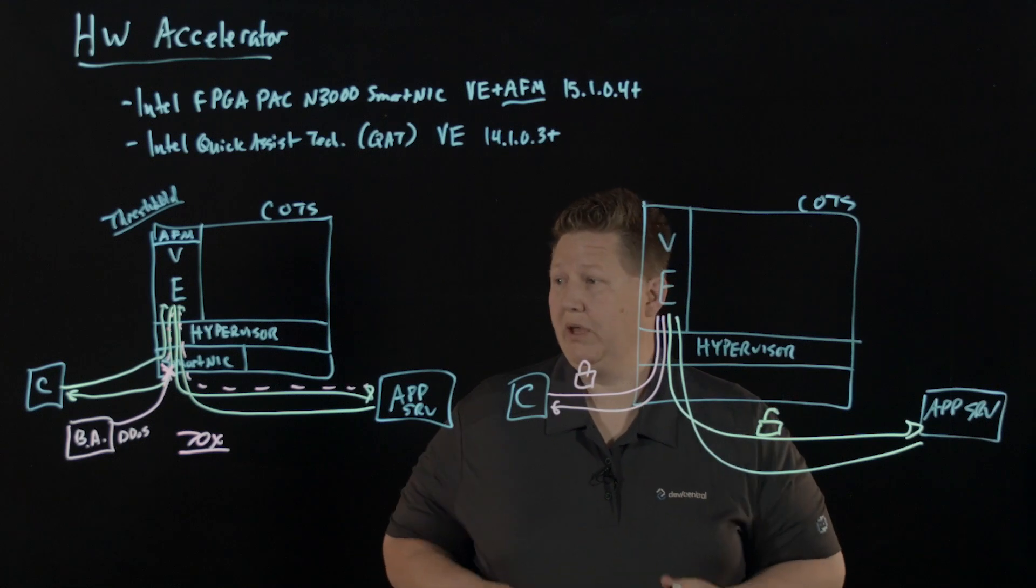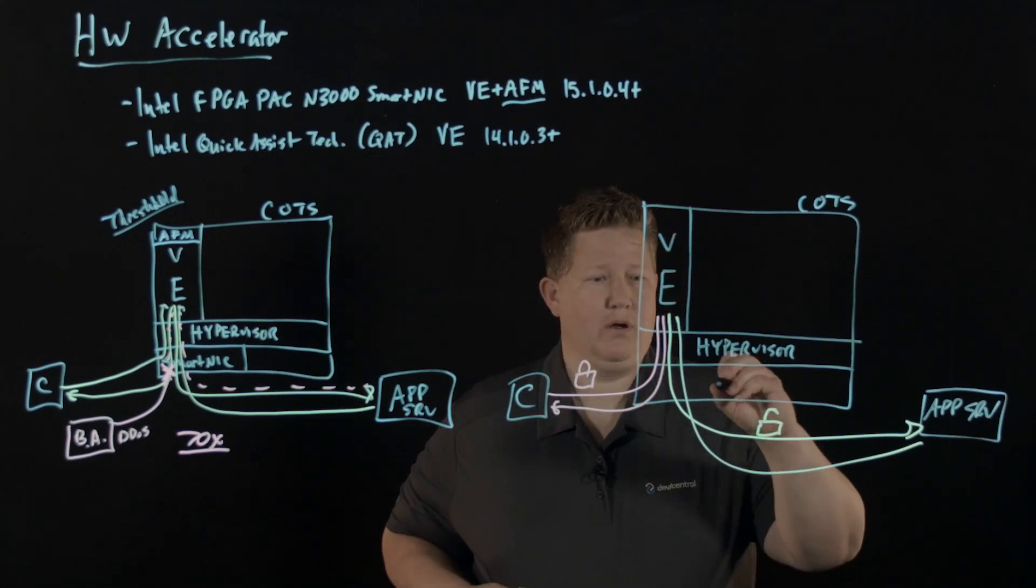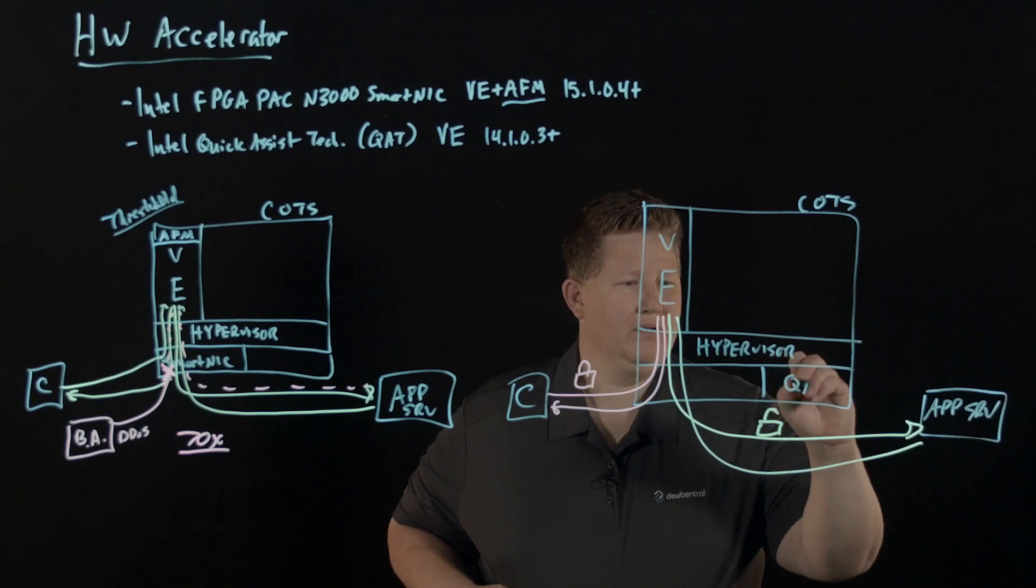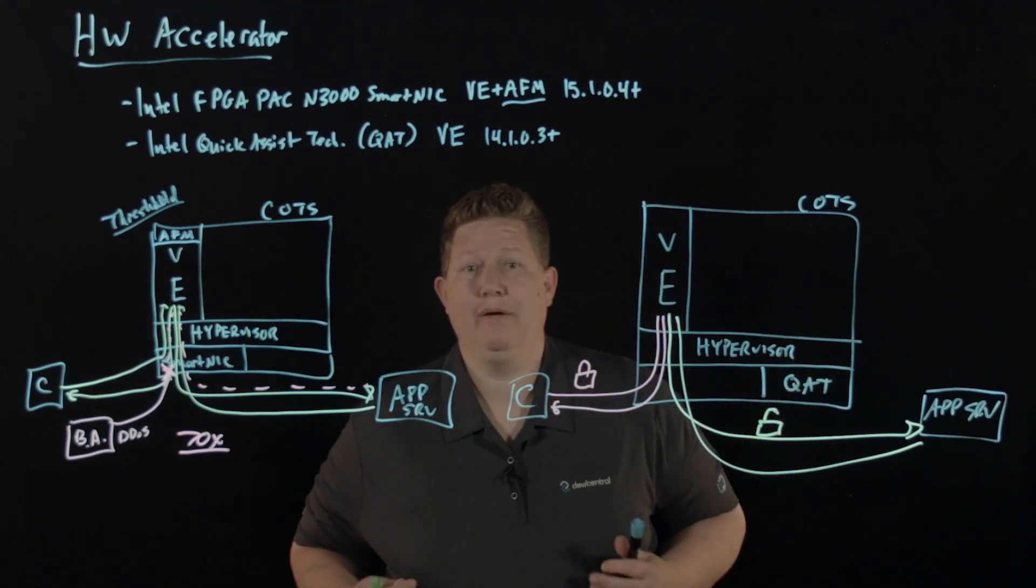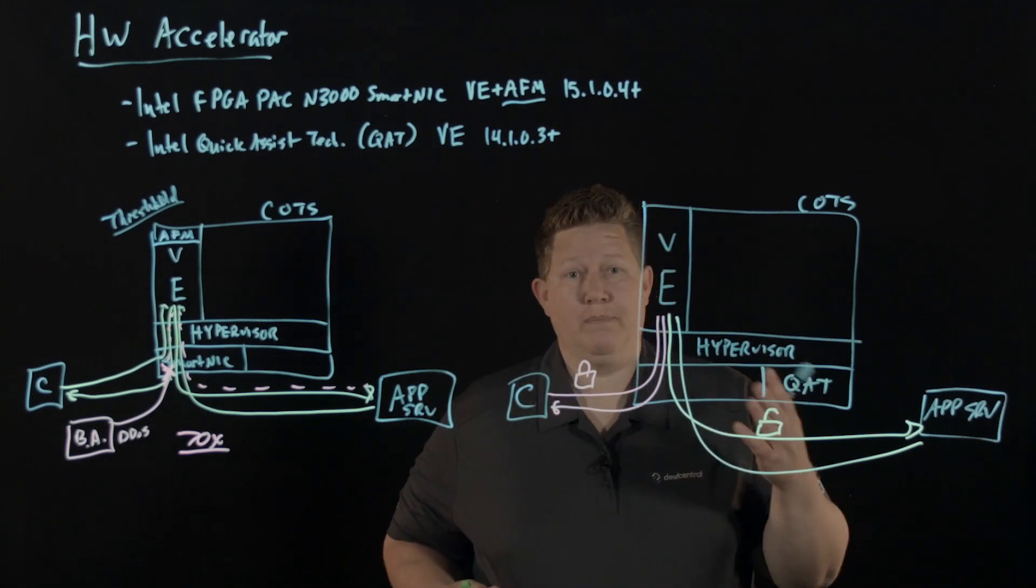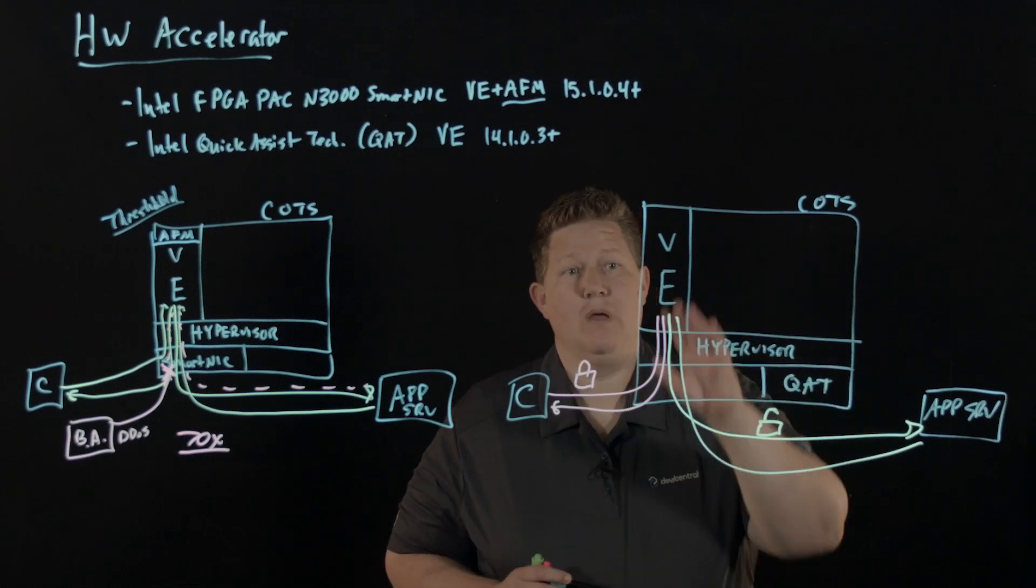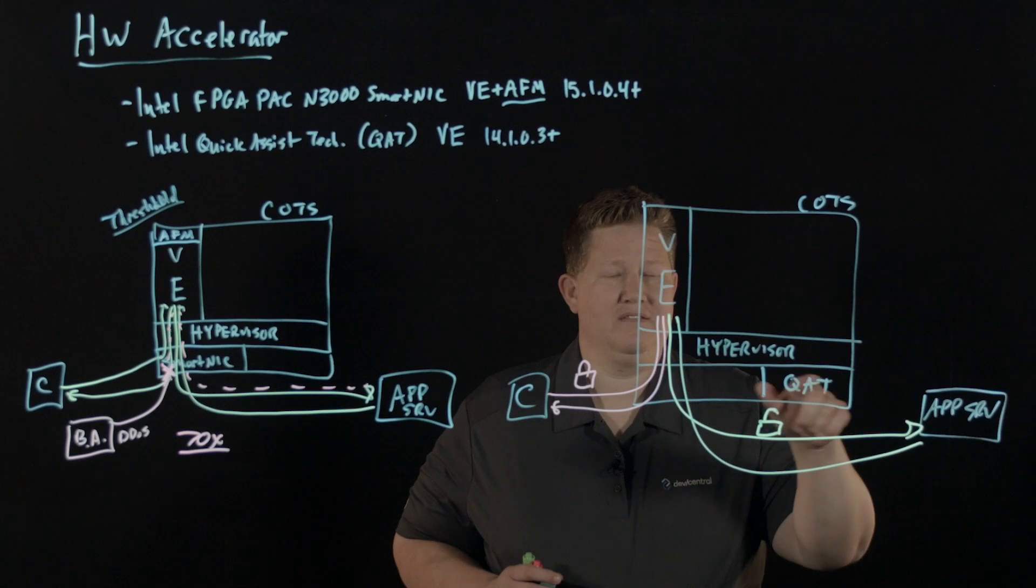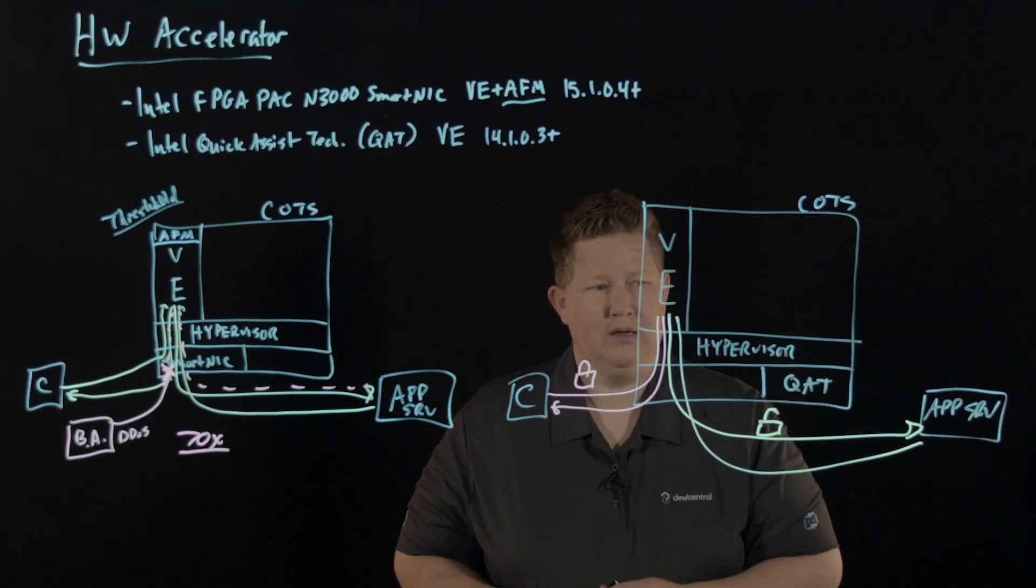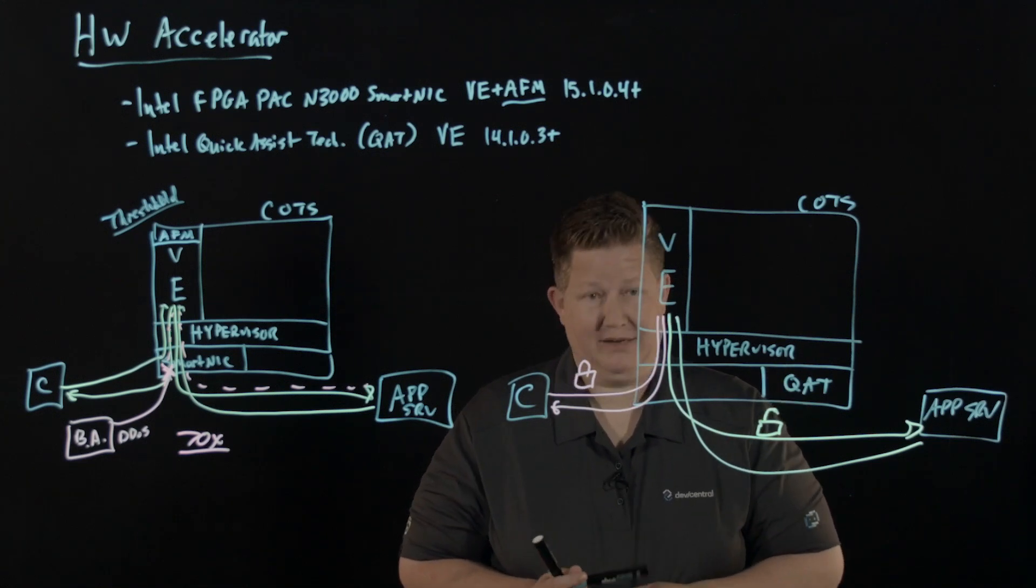Now, what we can do much like in this solution is we can install that Quick Assist Technology card and that is going to allow you to offload the crypto for this service. And so Virtual Edition in 14.1.0.3 and higher can take advantage of that card. And so instead of VE doing the decryption, this card is going to do it. And so VE just passes that traffic down.